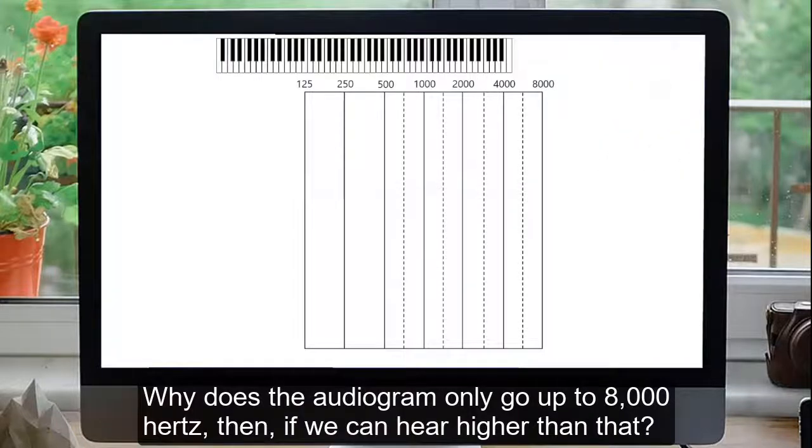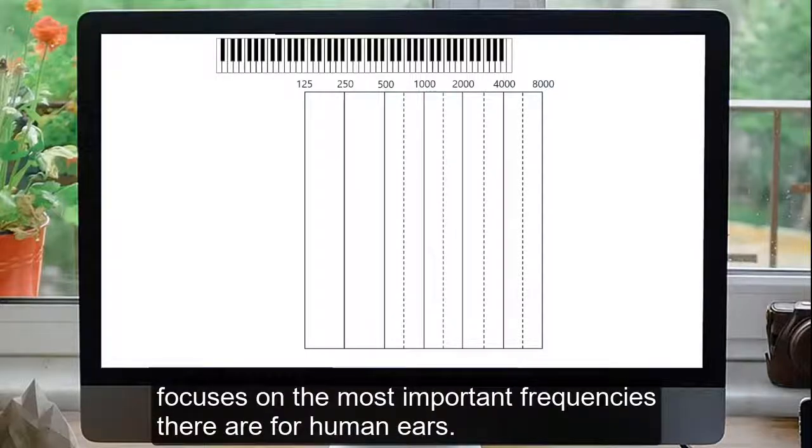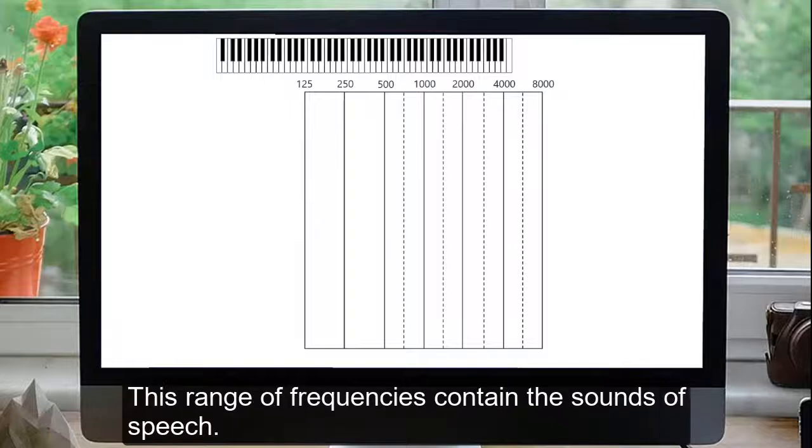Why does the audiogram only go up to 8,000 Hz then, if we can hear higher than that? It's because the audiogram focuses on the most important frequencies there are for human ears. This range of frequencies contains the sounds of speech. That's frequency.